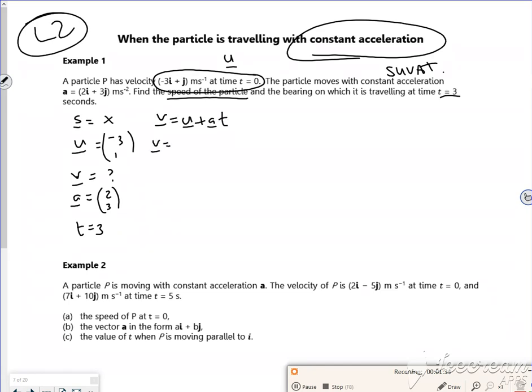So v = (-3, 1) + (2, 3) × 3. So the top line would be -3 + 2 × 3, and the bottom line would be 1 + 3 × 3. So my velocity is (3, 10) there.